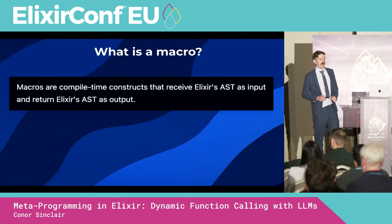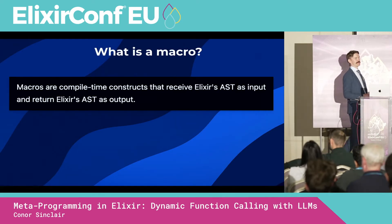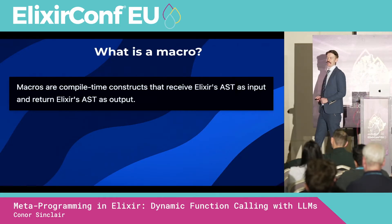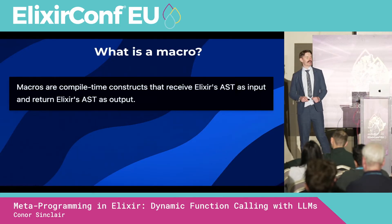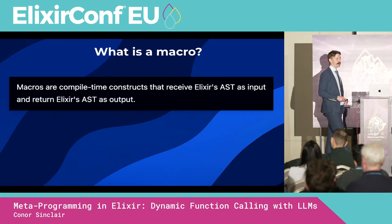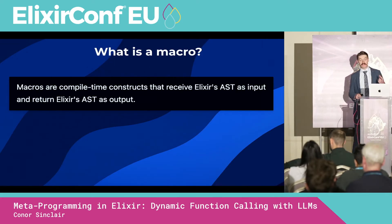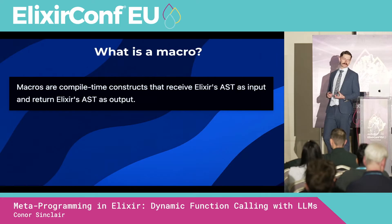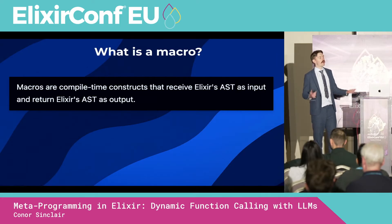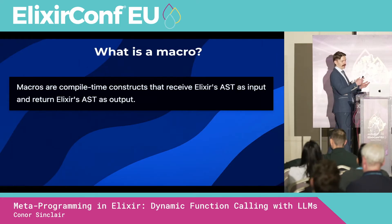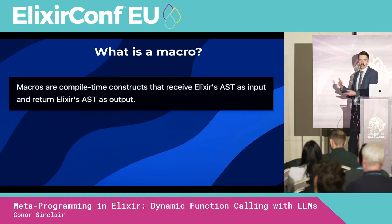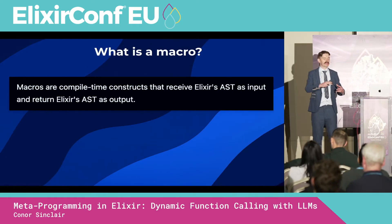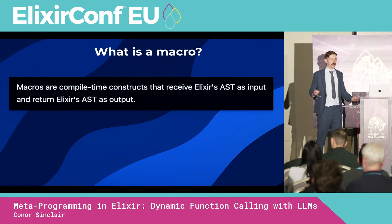Now for something completely different: let's talk metaprogramming and macros. I'm going to be completely honest — the amount of metaprogramming and macros we're going to be writing is going to be incredibly light. But I want to dig into a couple of very specific Elixir metaprogramming features which are going to unlock some very interesting capabilities. Simply put, a macro is code that can write more code. You write something very concise and it will be expanded out into something much more verbose behind the scenes.